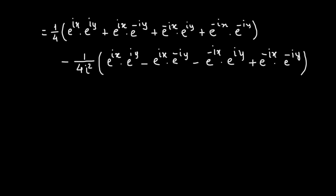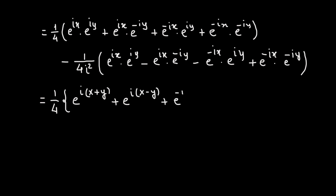We now combine the exponents. Since the base is the same, exponents add: e raised to the power of ix times e raised to the power of iy gives e raised to the power of i times x plus y. Similarly we get e raised to the power of i times x minus y, plus e raised to the power of negative i times x minus y, plus e raised to the power of negative i times x plus y.